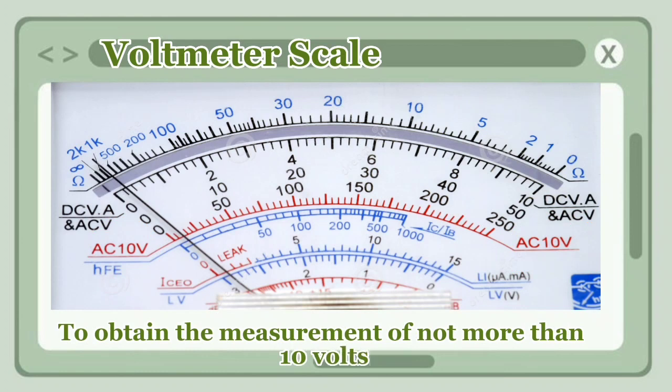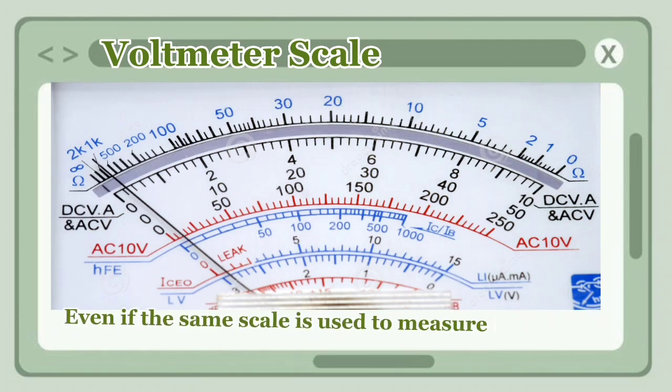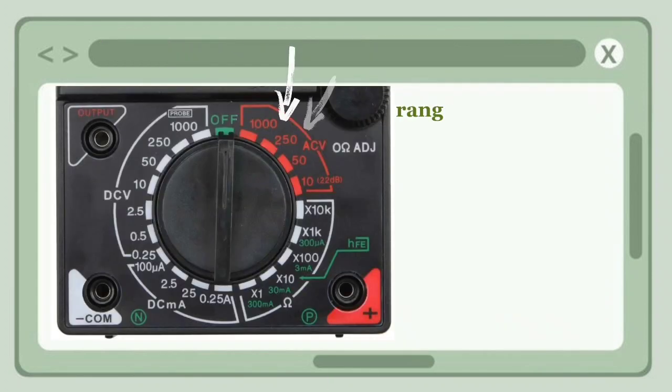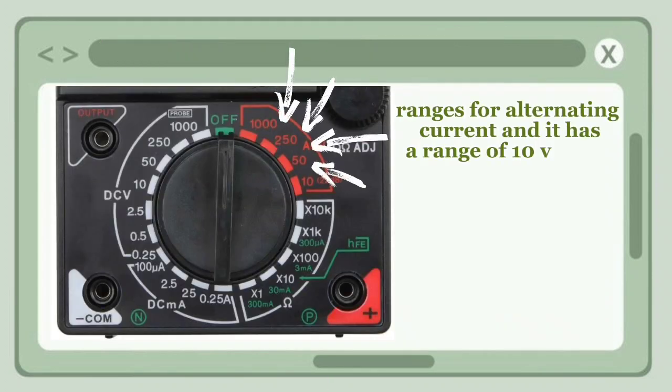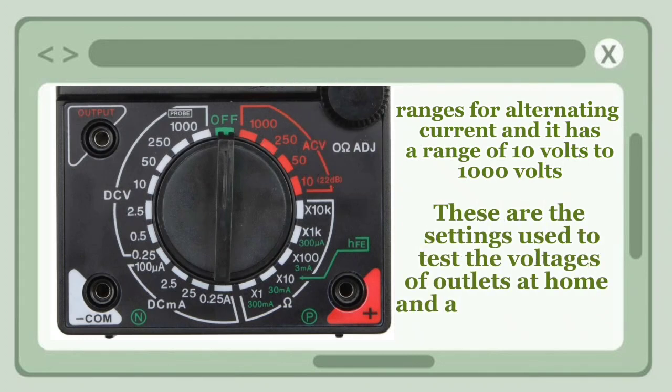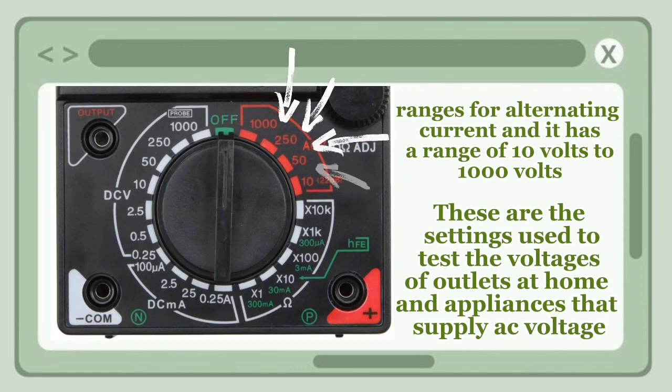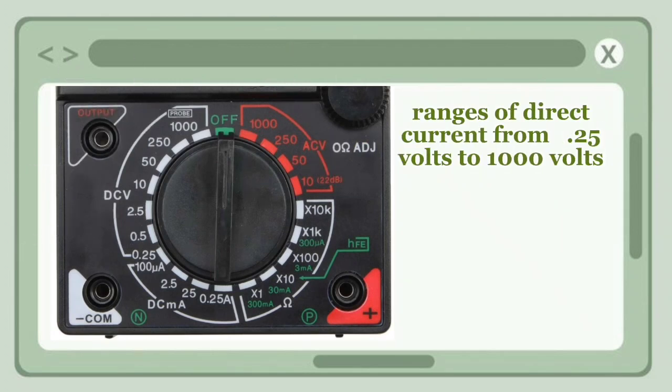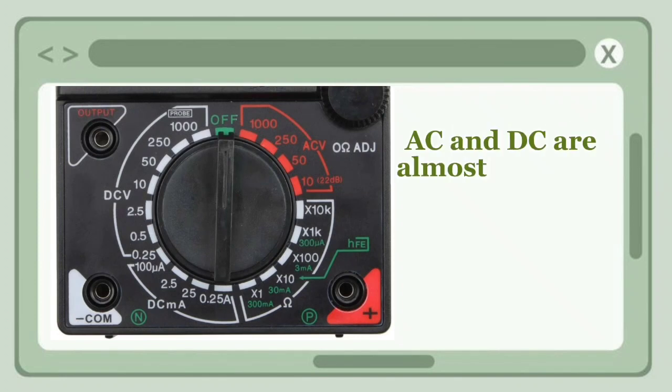Even if the same scale is used to measure AC and DC, their settings and specific ranges will still be different. Ranges for alternating current have a range of 10 volts to 1000 volts. These are the settings used to test the voltages of outlets at home and appliances that supply AC voltage. Ranges of direct current are from 2.5 volts to 1000 volts. AC and DC are almost the same in the ranges, so only in DC we can measure small voltages.